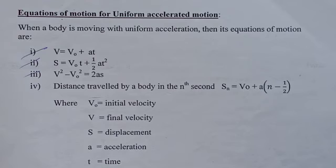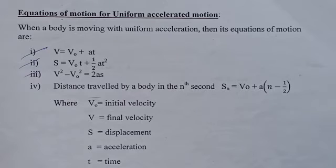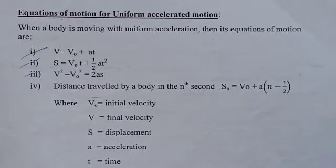Equations of motion for uniformly accelerated motion: when a body moves with uniform acceleration, the first equation is V = V₀ + AT. The second equation is S = V₀T + ½AT². The third equation is V² minus V₀² = 2AS.